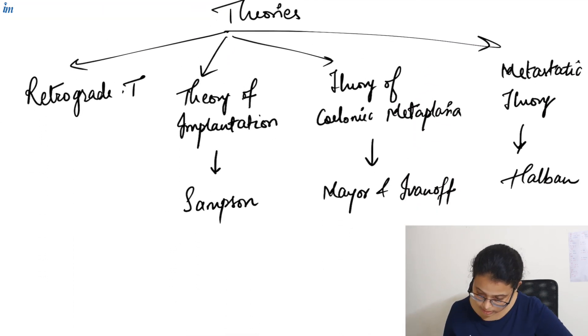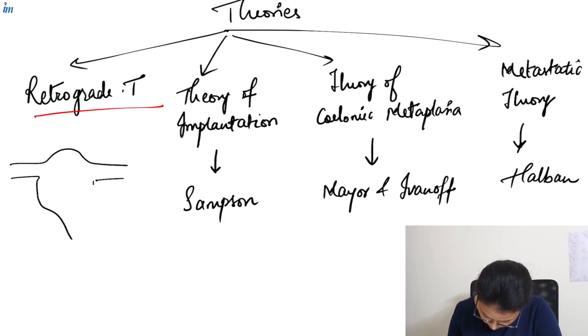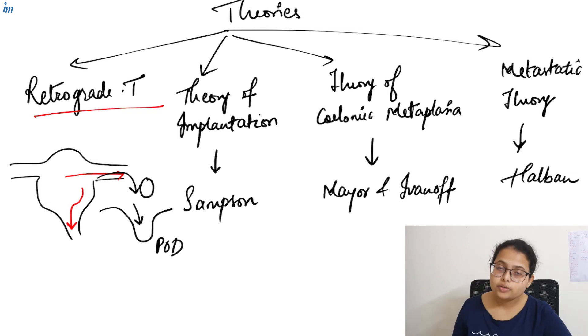Then, there are different theories explaining this endometriosis. First one is the retrograde theory. In this theory, suppose this is the uterus. Normally, blood will flow in this direction. But in endometriosis, blood flows in this direction. And here, we have ovary. And below that, here is the pouch of Douglas. Now, blood gets accumulated in this region. And then, it enters the pouch of Douglas. So, this retrograde theory explains why blood gets accumulated inside ovary and pouch of Douglas.